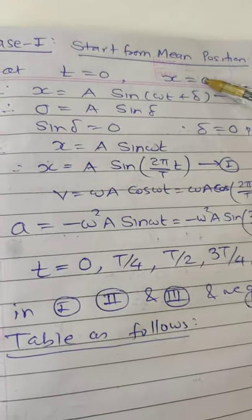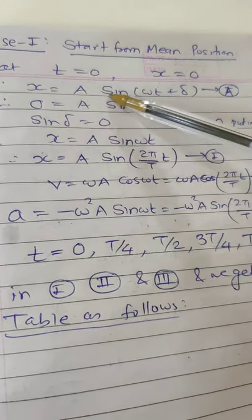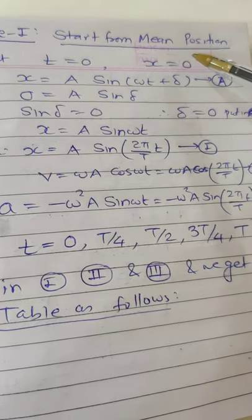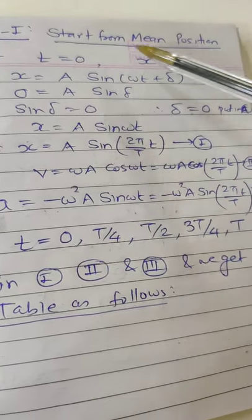Since particle is started from mean position, we know at t equal to 0, x equal to 0. We know x equal to A sin(ωt + δ). Put t equal to 0 and x equal to 0.